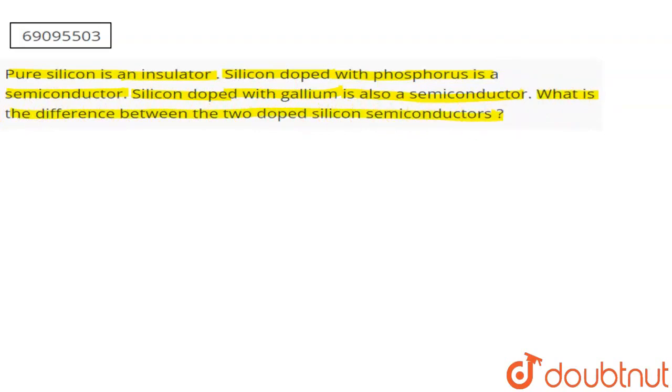The first thing we need to understand is what will happen. You have to see phosphorus and gallium. The silicon that I have doped with phosphorus versus the one doped with gallium creates two types of semiconductors.